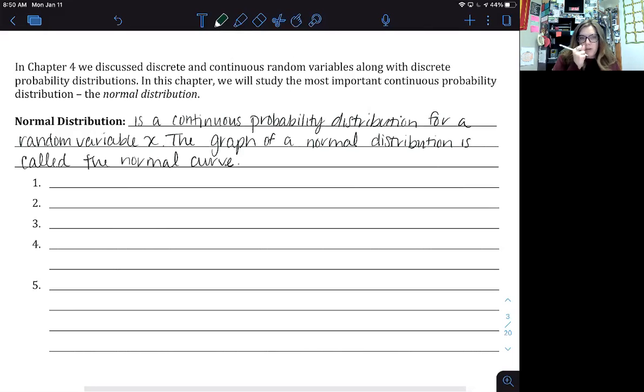Okay, and then we have five properties. So the first one is that the mean, median, and mode are equal.